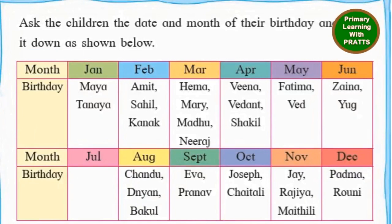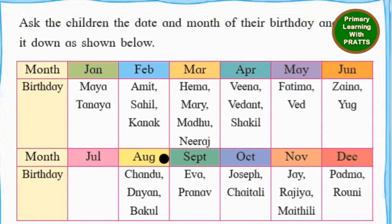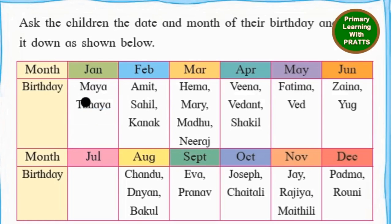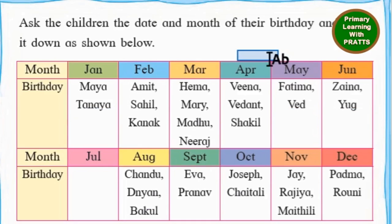Let's move on to the next page which is page 65. Ask the children the date and month of their birthday and note it down as shown below. All of us used to have a birthday chart in our classes - in the same way a birthday chart is given here with Jan, Feb, March, April, May, June, July, August, September, October, November, December. We will look at this calendar and answer the questions, which is again known as managing information.